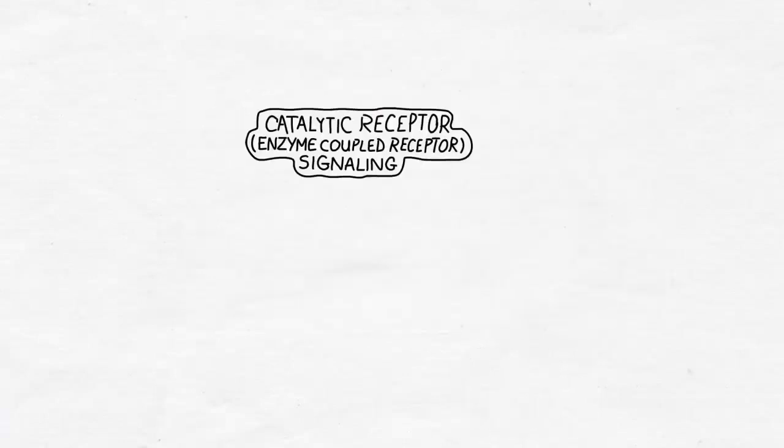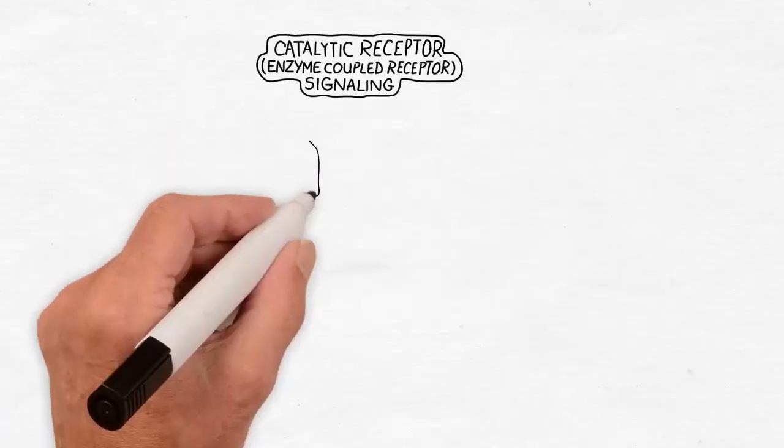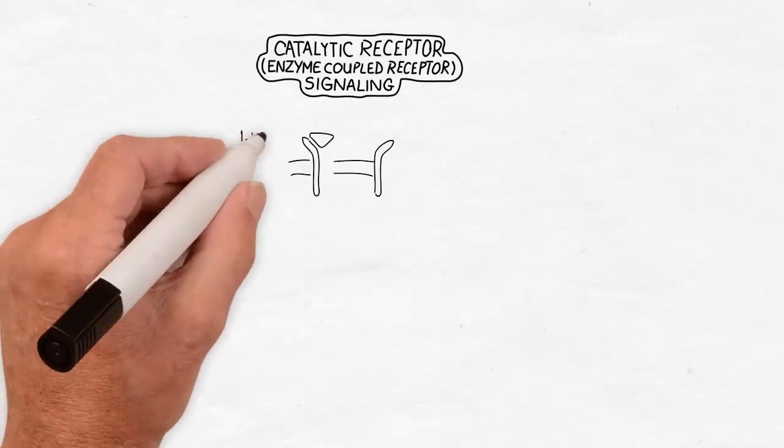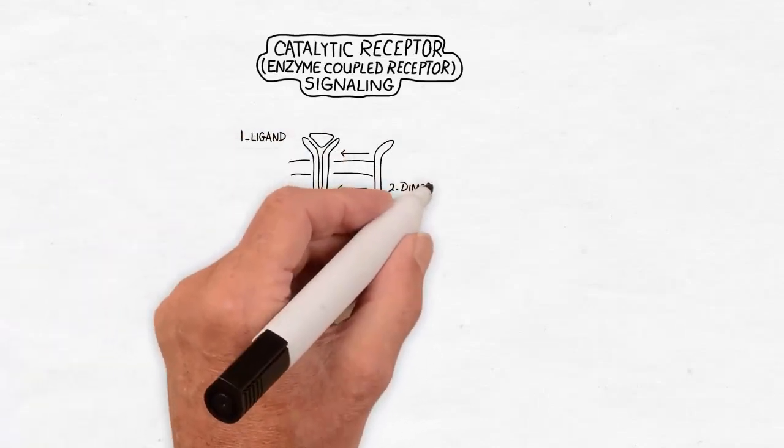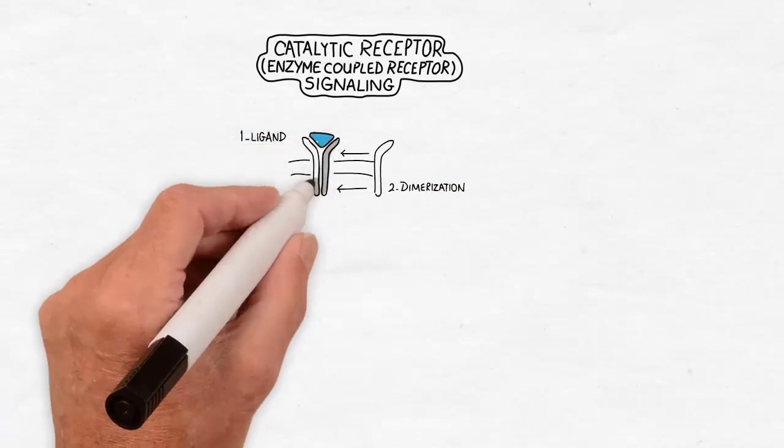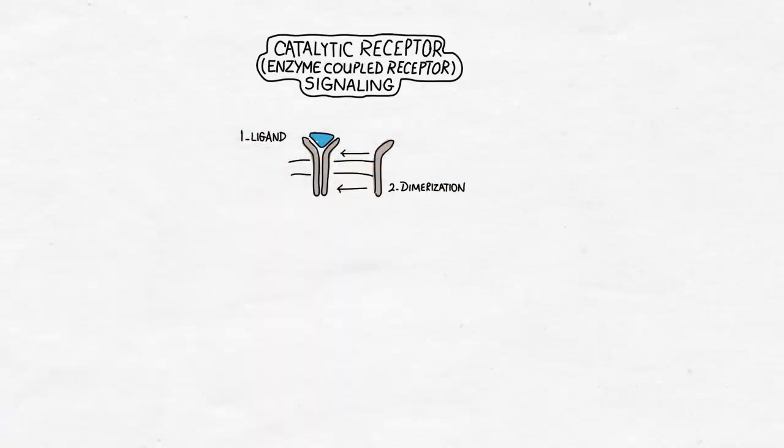The case is different here in the catalytic receptor signaling, because the receptor is only one subunit, and upon binding of a ligand, it has to dimerize with a similar subunit in order to send an activation signal.